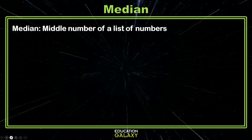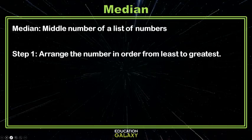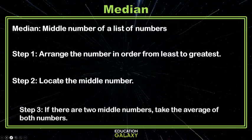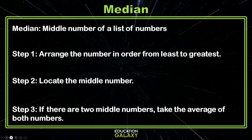Now let's look at the median. The median is the middle number of a list of numbers. Step one is to arrange the numbers in order. You always arrange them from least to greatest. Then, you locate what the middle number is. If there are two middle numbers, you have to average them together to get what the median is.